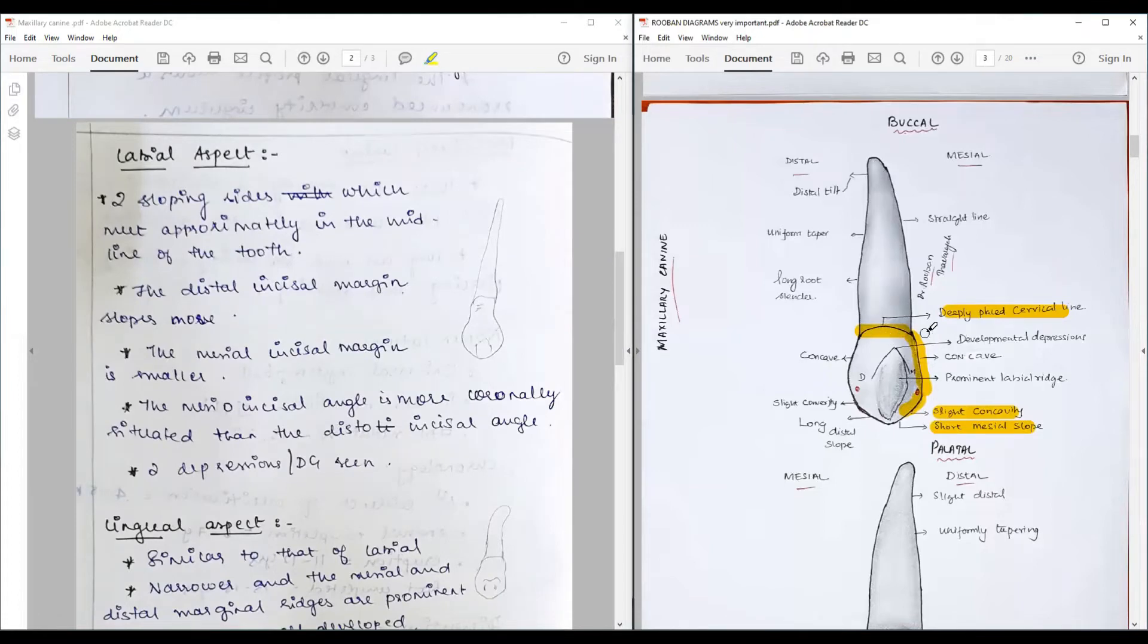After which it forms a slight concavity to form what we call the short mesial slope. So the deeply placed cervical line with convexity facing the root tip forms a slight concavity to meet the contact area. The contact area is at the midline somewhere at the incisal and middle third meeting point, then has a slight concavity forming the short mesial slope, then forms the long distal slope after the cusp tip.